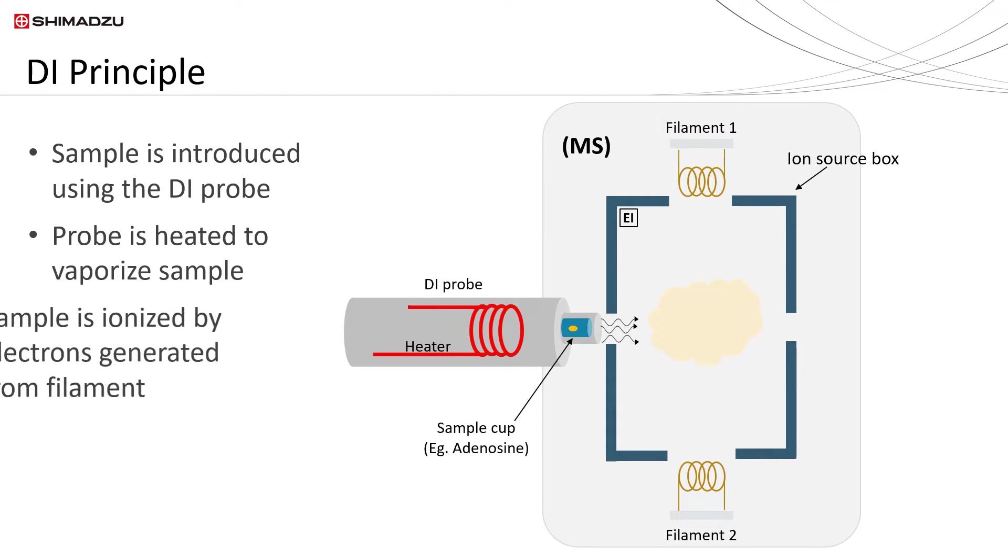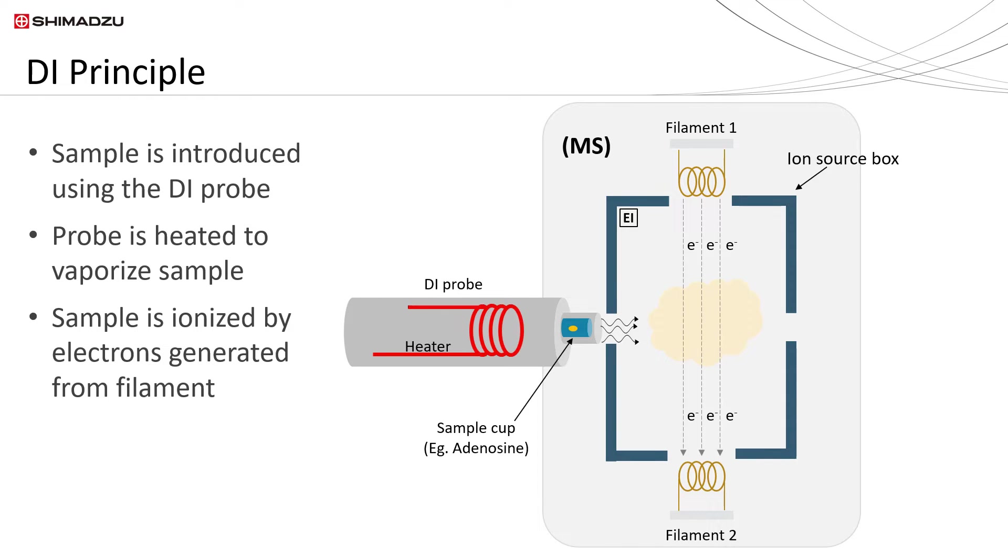The heated probe will vaporize the sample which enters the ion source box. In the ion source box, high energy electrons produced by the filament ionize the compounds in the sample, generating fragment and molecular ions. This ionization technique is called electron ionization.